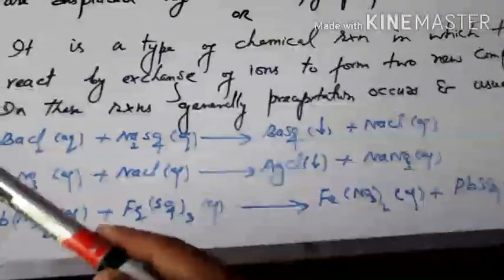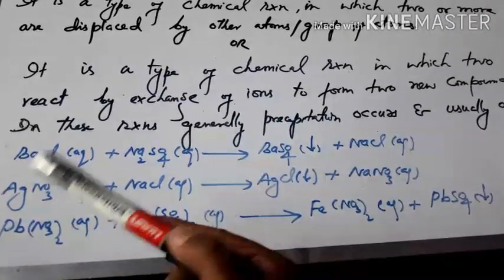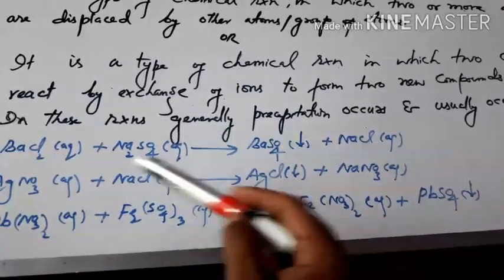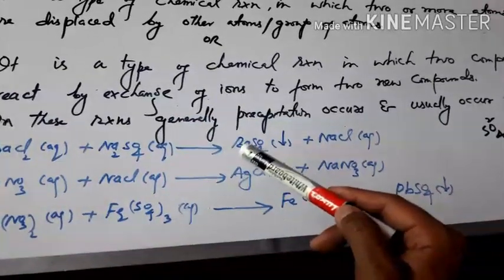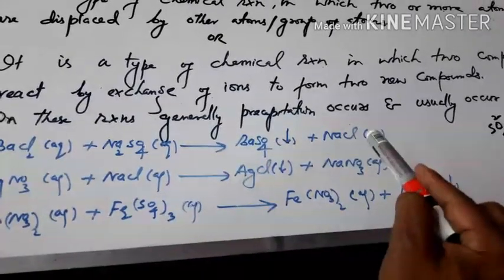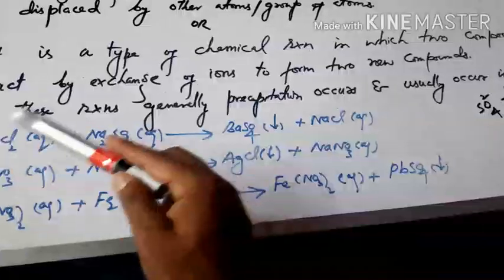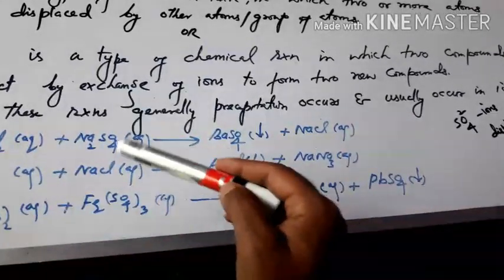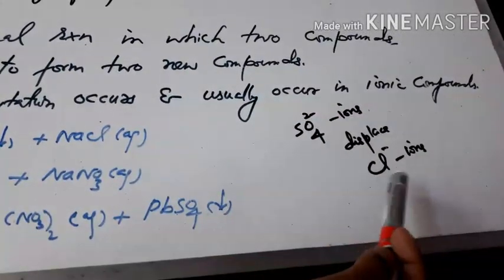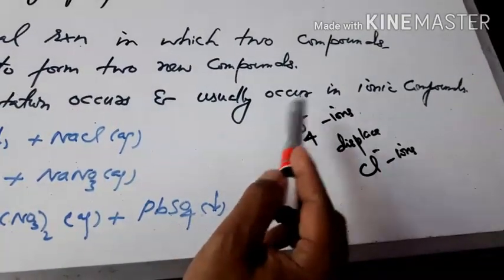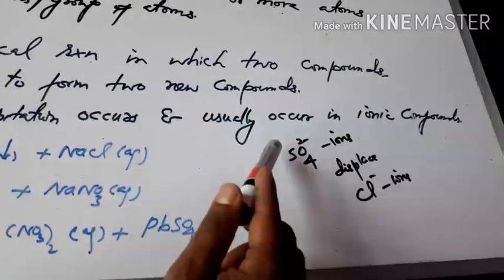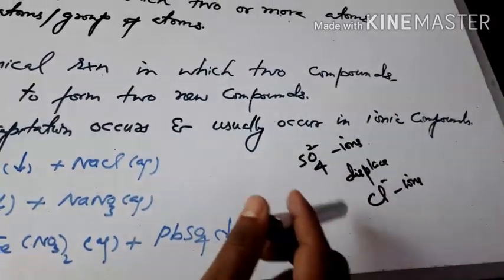For example, barium chloride in solution form and sodium sulfate also in solution form — when these react, the product is barium sulfate, which is an insoluble substance, called a precipitate, and sodium chloride. In barium chloride there are chlorine ions, and in sodium sulfate there are sulfate ions. The sulfate ions are displaced by chlorine ions. This is why it is called a double displacement reaction.